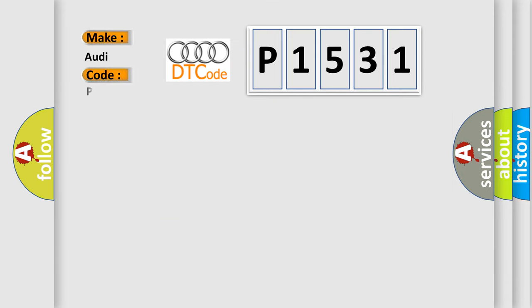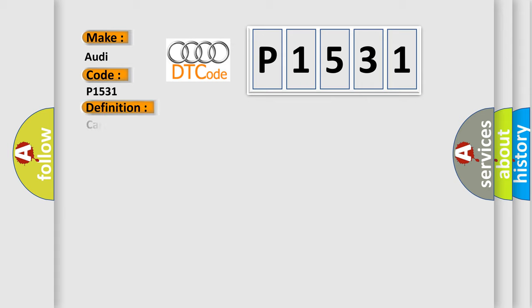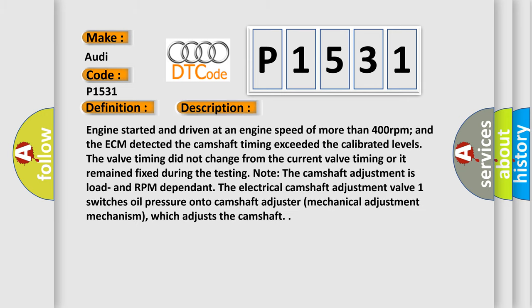So, what does the diagnostic trouble code P1531 interpret specifically for Audi? The basic definition is: Camshaft control circuit open. The engine started and driven at an engine speed of more than 400 RPM, and the ECM detected the camshaft timing exceeded the calibrated levels. The valve timing did not change from the current valve timing or remained fixed during testing. Note that camshaft adjustment is load and RPM dependent. The electrical camshaft adjustment valve switches oil pressure onto the camshaft adjuster mechanical adjustment mechanism, which adjusts the camshaft.